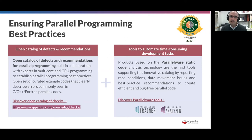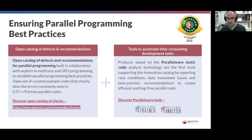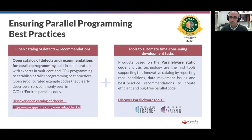Two pillars are the basis of this approach. First, the catalog of defensive recommendations — you can click on the URL to see a listing of defensive recommendations available to learn and check in your code. Additionally, we need tools to automate time-consuming tasks, so the tools can detect defects and recommendations automatically and suggest ways to fix them to improve the quality of your parallel code. This is where Parallelware Trainer and Parallelware Analyzer come in.